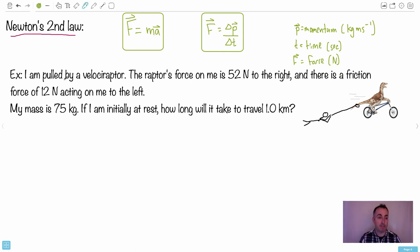We have an example here, so let's just say I'm pulled by a velociraptor. Really important, this right here is F net. In other words, this is your unbalanced force. This one here is really important. In this example, I have that I'm pulled by a velociraptor. It's a ridiculous situation. I just drew a little man here. The raptor's force on me is 52 Newtons to the right. We're going to assume it's not on an angle. We'll make it really nice and simple.